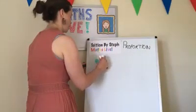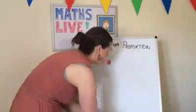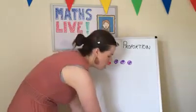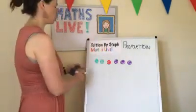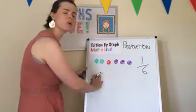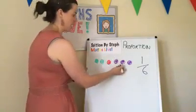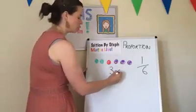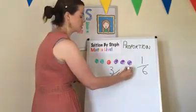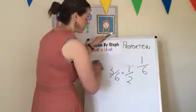Let me draw some circles. What proportion of the circles are red? There's one red circle out of a total of six. What proportion are purple? There are three purple out of six total, so three out of six circles are purple. And as you know with fractions you can simplify them — three out of six is also known as a half. So you can spot that half of all the circles are purple.